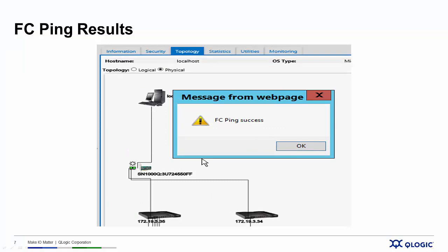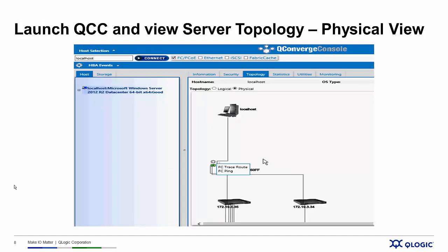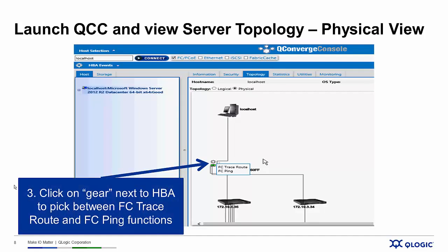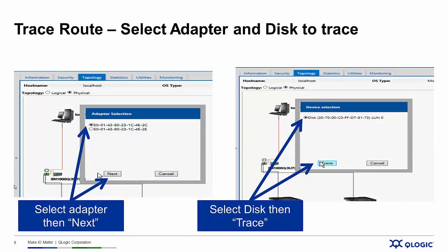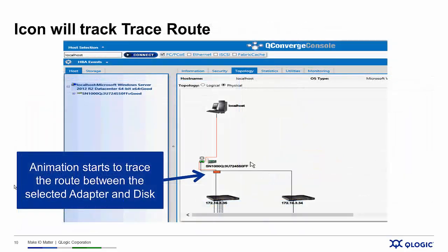We go back to the gear icon and select FC-TraceRoute. From there we get similar pop-up boxes: one to select the adapter port and the other to select the storage device. Instead of a box marked Ping, this time we have a box marked Trace for the TraceRoute function. When I execute the TraceRoute function, an icon should get displayed and travel through the fabric to show me the physical connectivity between the selected adapter port and the storage port on the array.